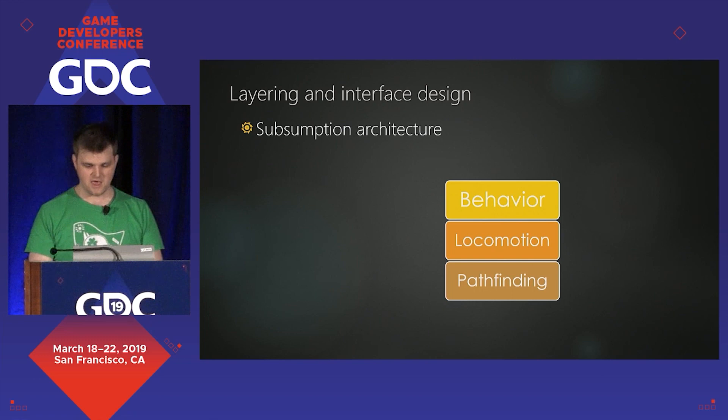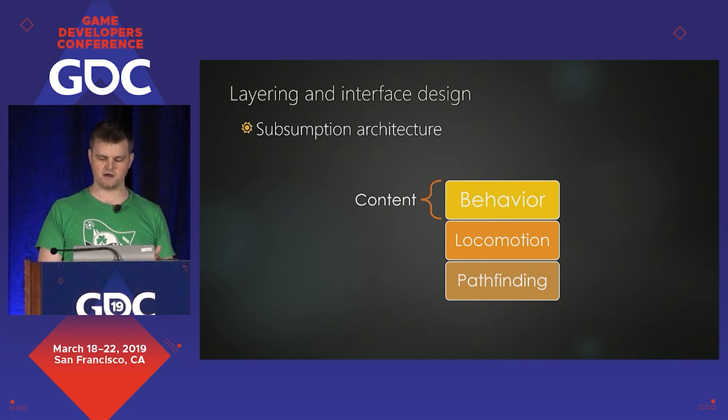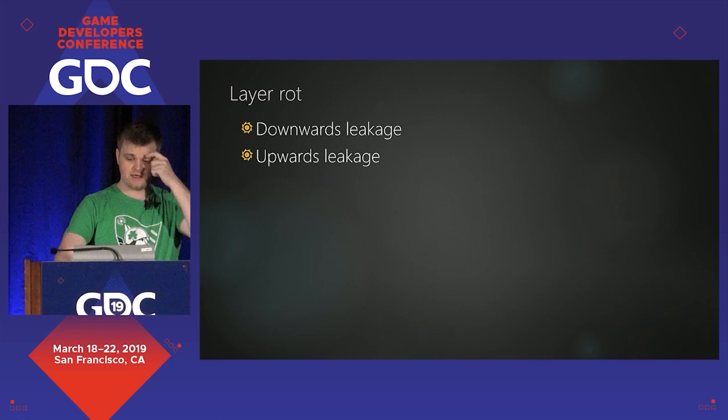What you'll notice when you look at these layers is that the creative aspect of AI — the content, what makes this guard different from that villager — is all up in the top layer. As you go down, the layers become generic. They're services, not content. What you want is for the lower levels to be rock-solid and boring so you can ignore them and concentrate on the content, which is where your game really is.